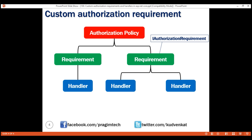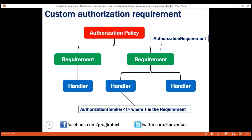It is in the authorization handler that we write our logic to allow or deny access to a resource like a controller action. An authorization handler implements AuthorizationHandler of T, where T is the requirement. For example, let's say an admin user can assign or remove roles of other admin users, but not his own roles. To achieve this, we need to know the logged-in user ID and the user ID of the admin being edited. If they are the same, we do not want to allow access. The admin user ID being edited is passed in the URL as a query string parameter. From the authorization handler, we will have access to the route data and URL query string parameters. Dependency injection is also supported, meaning we can even inject and use other services if required.